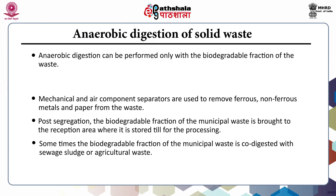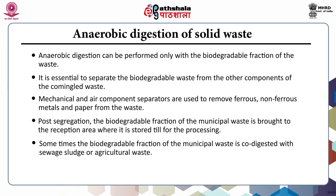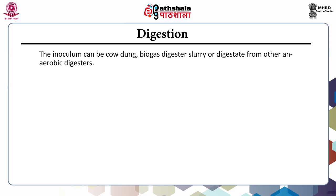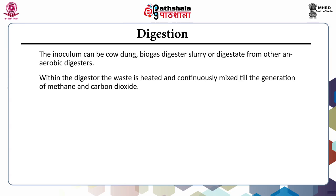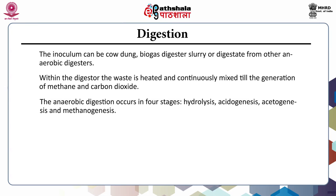Anaerobic digestion can be performed only with the biodegradable fraction. It is essential to separate the biodegradable waste from other components of the commingled waste, which is generally done by segregation or screening. Within the digester, the waste is heated and continuously agitated until the generation of methane and carbon dioxide. Anaerobic digestion includes four stages: hydrolysis, acidogenesis, acetogenesis, and methanogenesis.